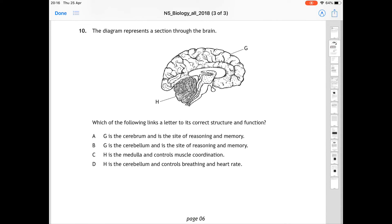For question 10, the diagram represents a section through the brain. G and H are highlighted on the structure of the brain. Which of the following links a letter, G or H, to its correct structure and function? So the first one you read, A, is correct, where it says G is the cerebrum, which is true, and it is the site of reasoning and memory, which is also true. If you have one of these questions and you think the first question or first answer is correct, make sure to go through B, C, and D as well, just to make sure you've not made a mistake. But if you read through them, you realize the rest of them are incorrect, and A is the correct answer.